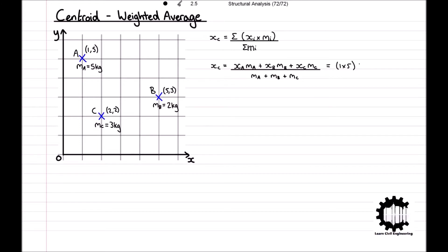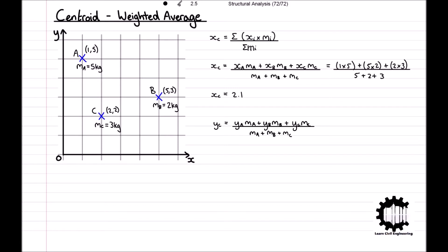Substituting the corresponding weights and x coordinates for each point we get the weighted average of the x coordinates for the system — the x coordinate of the centroid xc equals 2.1. Now we repeat this process for the weighted average of the y coordinates: the y coordinate of the centroid yc is equal to 5 times 5, plus 3 times 2, plus 2 times 3, all divided by 5 plus 2 plus 3, which equals 3.7. Therefore the centroid of this system of particles is located at (xc, yc) = (2.1, 3.7).